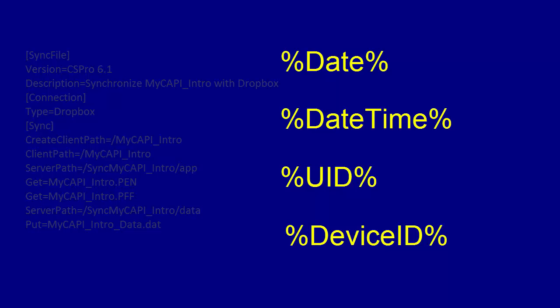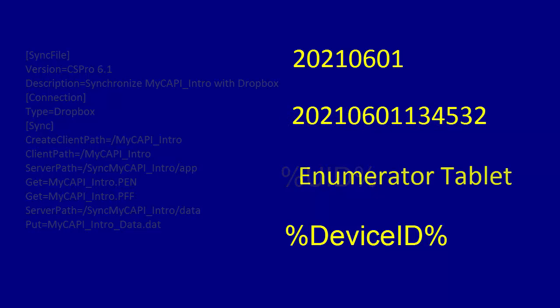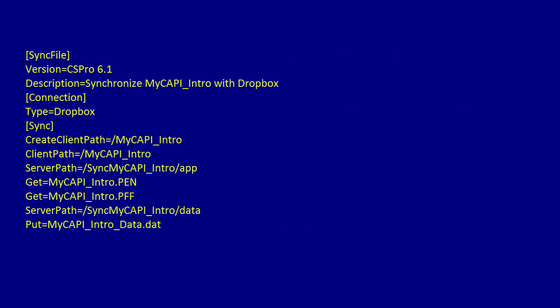%DATE% is replaced by the date. %DATETIME% is replaced by the date and time. %UID% is replaced by the name of the tablet user — this comes from the email used to configure the tablet. %DeviceId% is replaced by the system-generated unique ID of the device. For example, if the username is Taelo, and we change the server path in our .pnc file as follows: